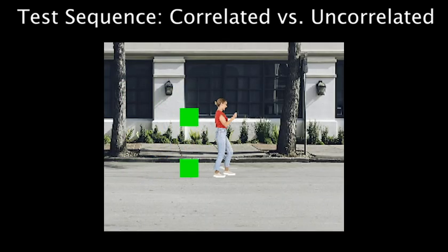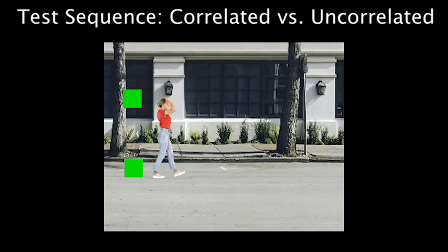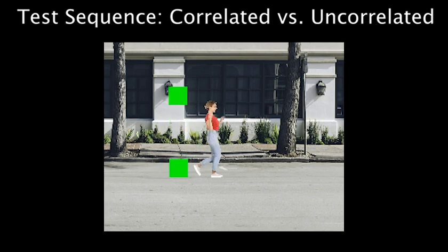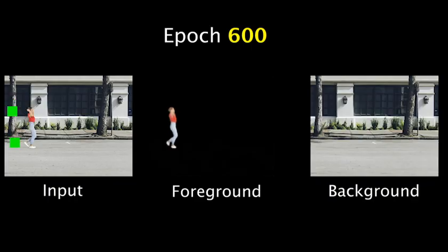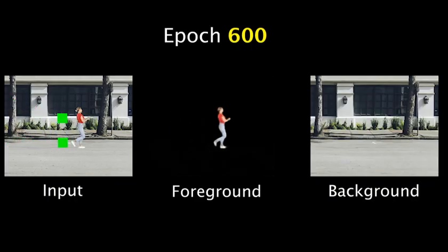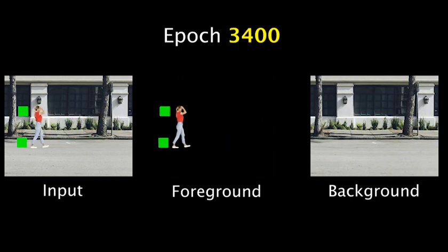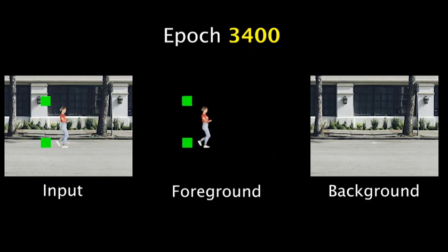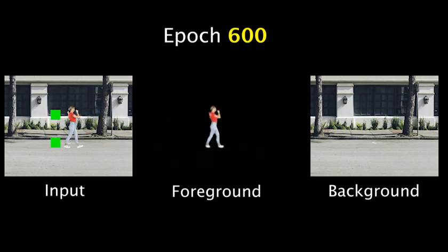Correlated motion is learned before uncorrelated motion. In this example, one green square is well correlated with the person, while the other green square is randomized. The network learns the person after epoch 600, the smoothly moving square after epoch 1200, and the randomized square is only learned after epoch 3400.